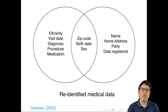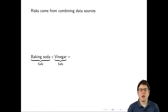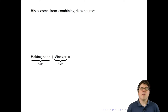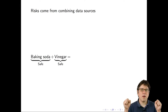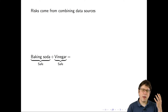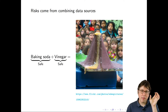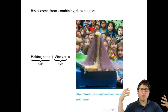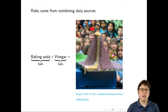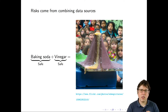This attack by Sweeney is illustrative of a broader pattern of attacks. A mental model I like: the risks from data sources come from combining them. You can have two data sources that are on their own safe, but when you put them together the problems arise. It's like elementary school science — baking soda is safe, vinegar is safe, but when you put them together you get a volcano. The de-identified medical records were safe alone; the voting records were safe alone; but merging them created the privacy problem.